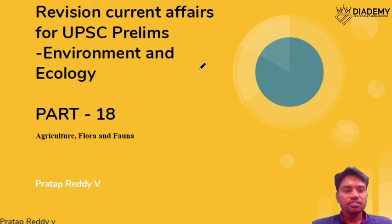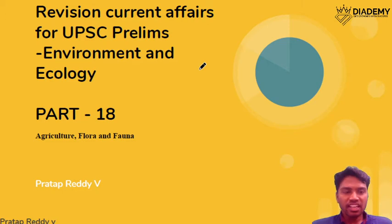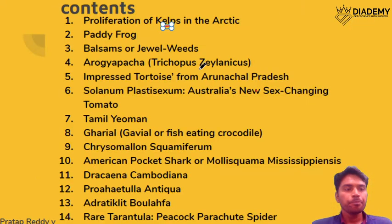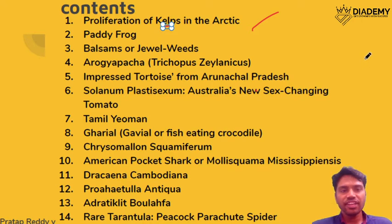Welcome back friends. Today we will be looking at Part 18 of our current affairs revision. We will cover agriculture, flora and fauna — different species that have been recently discovered or are in the news. First, we will look at the proliferation of kelps in the Arctic region. Kelp refers to seaweed algae.